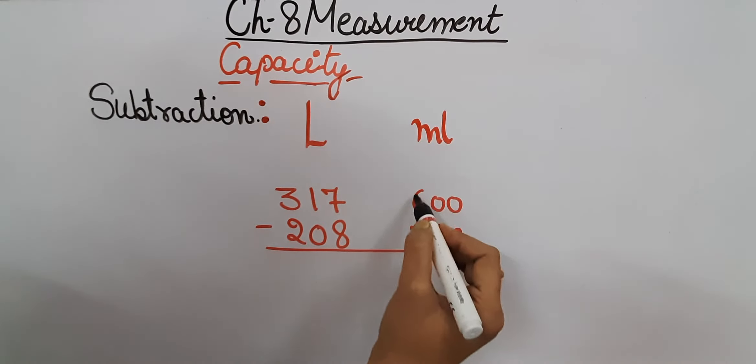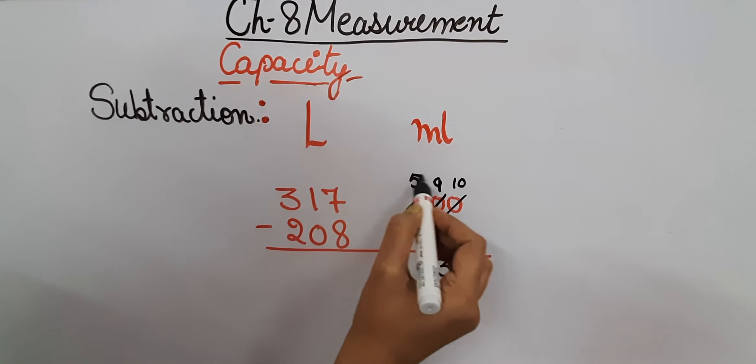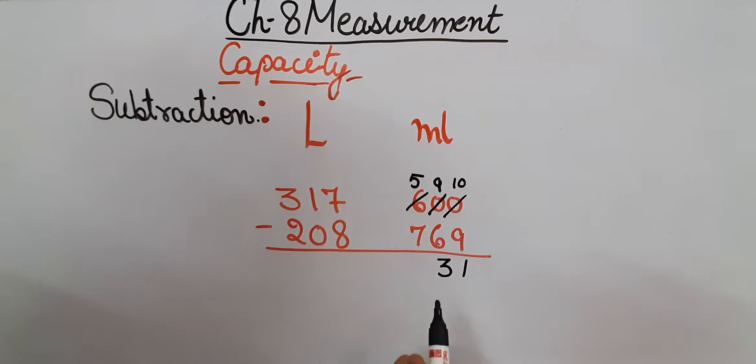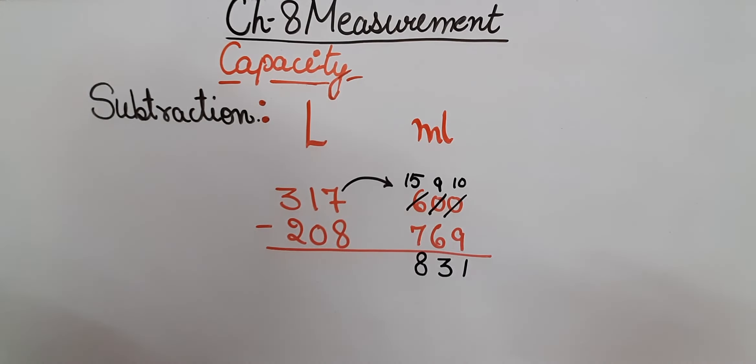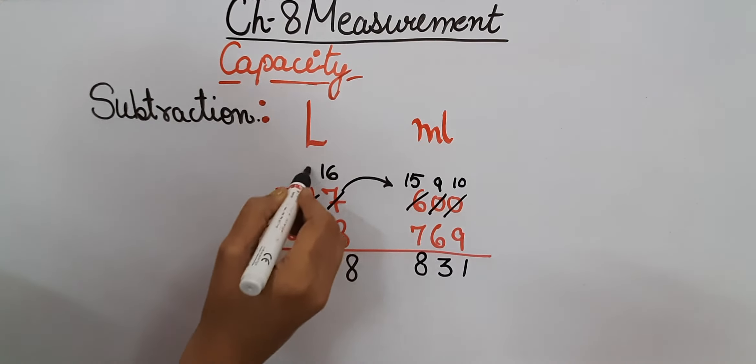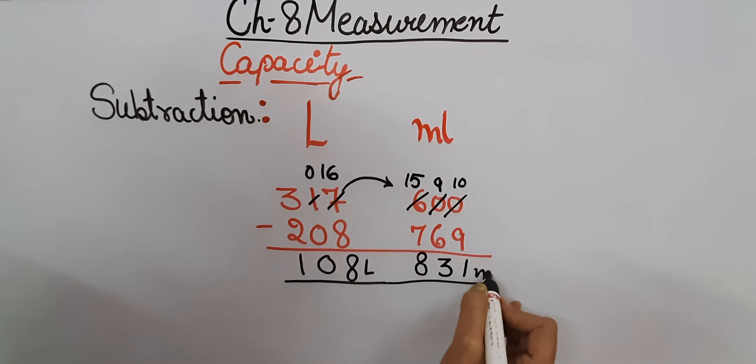These are zeros, so we will borrow and it will become 10. So 10 minus 9 will be 1. This is 9 now, so 9 minus 6 is 3. Now this has become 5. 5 minus 7 is not possible, so it will again borrow from here and will become 15. Now 15 minus 7 is 8. This 7 is now 6, so 6 again will borrow and will become 16. 16 minus 8 is 8. 1 is 0 now, so 0 minus 0 is 0. 3 minus 2 is 1. So the answer will be 108 liters 831 milliliters.